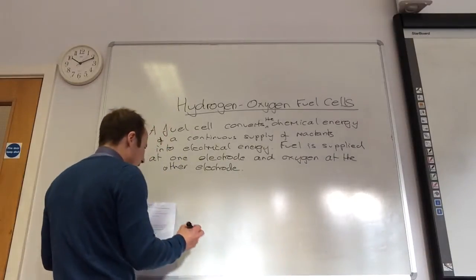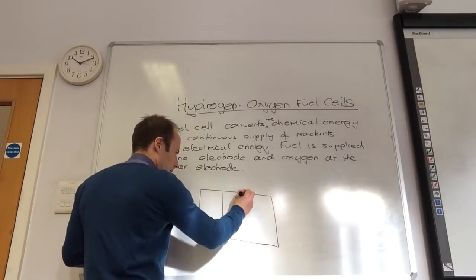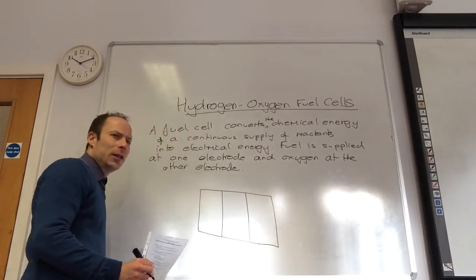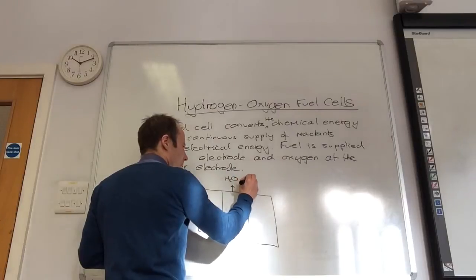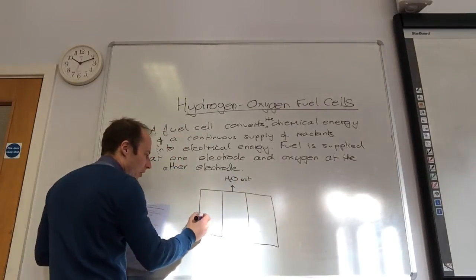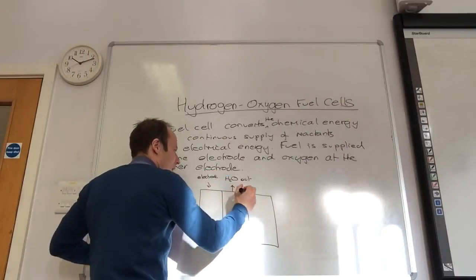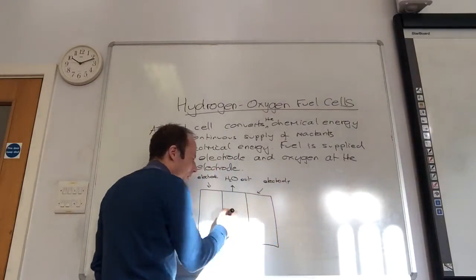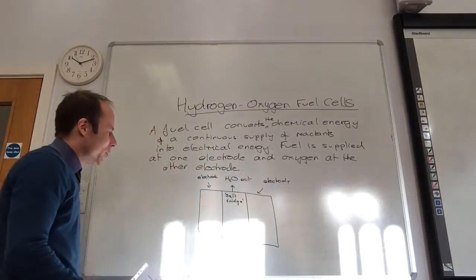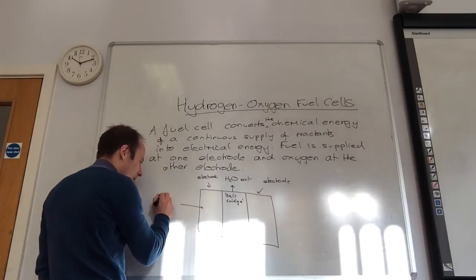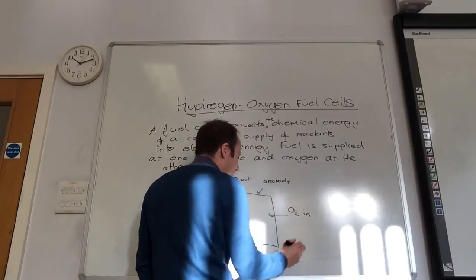Let's do a little diagram. So we have one electrode here and another electrode on the other side. The bit in the middle is like your salt bridge to connect the two together. In this one I pump in hydrogen — H₂ in. In the other one I pump in oxygen — O₂ in on that side.